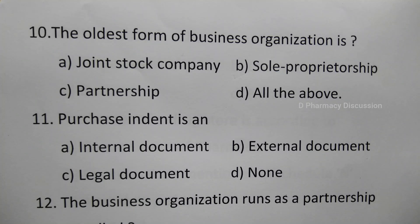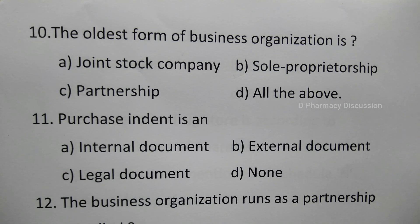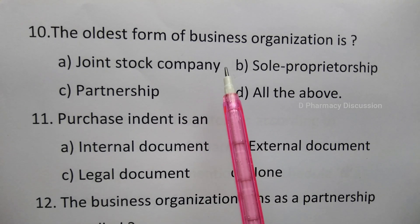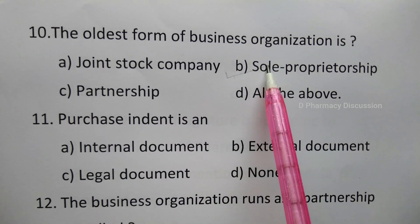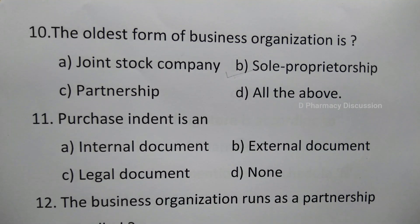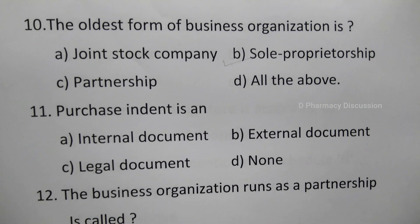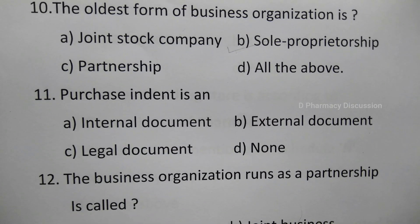Question 10: The oldest form of business organization is — option A: joint stock company, B: sole proprietorship, C: partnership, D: all the above. The correct answer is option B, sole proprietorship.